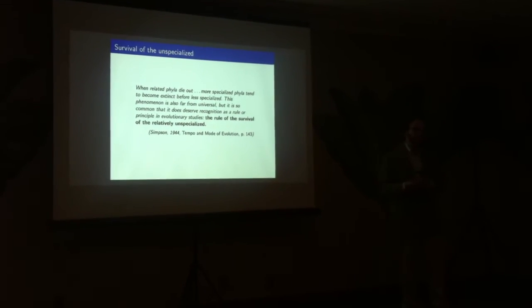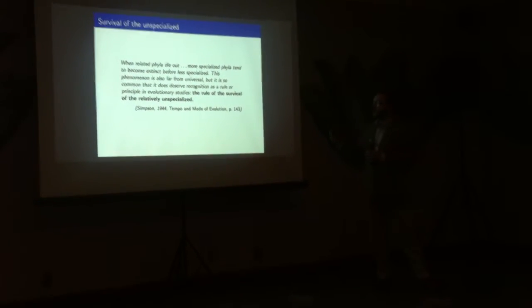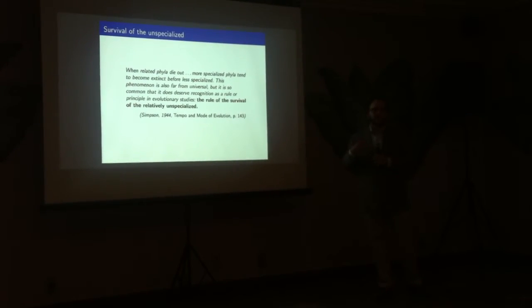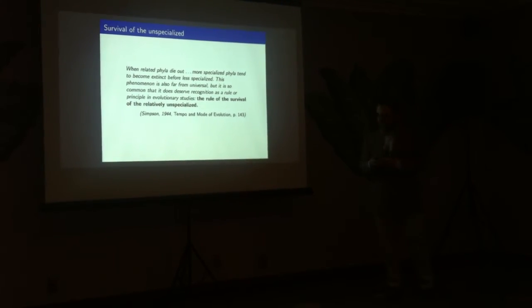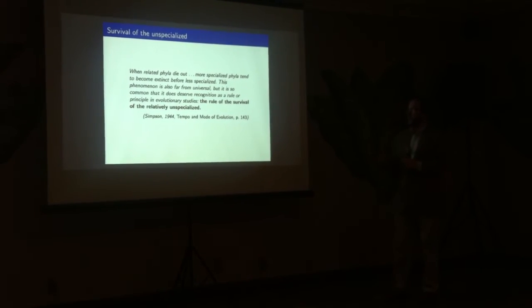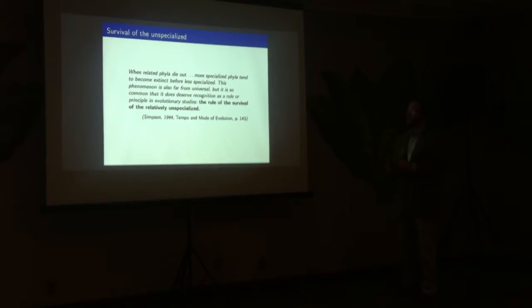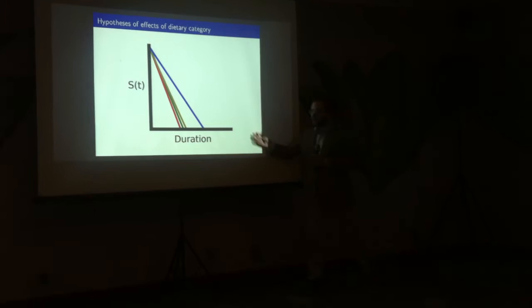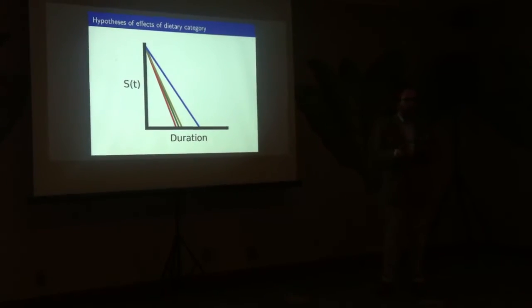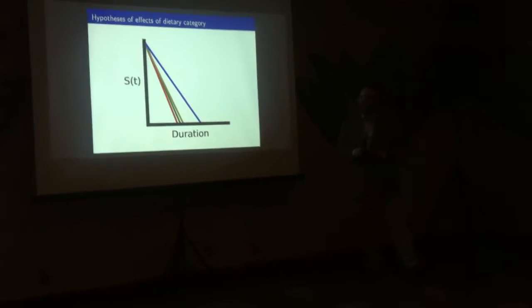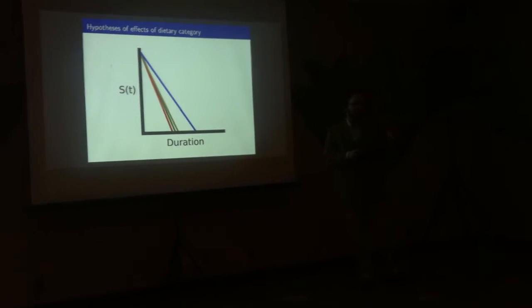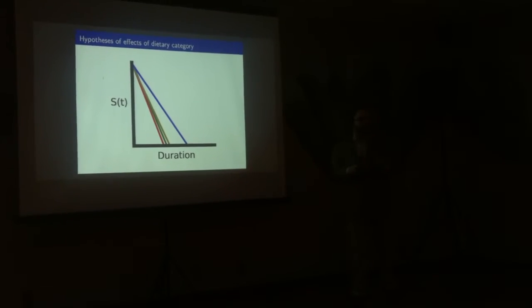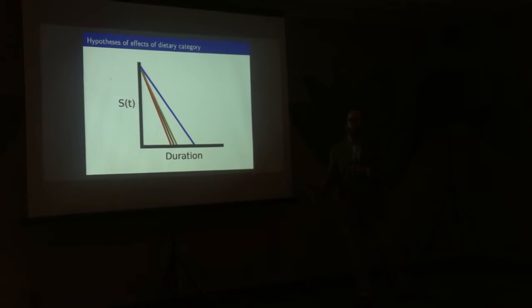This is the rule of the survival of the non-specialized. Now remember in the 40s when they say phyla, we would say taxa. That was just where the language worked. So given this kind of basic rule, which we've shown a few times, we can make some statements about dietary category, where you would say blue is something like omnivory, the other colors are more specialized versions of that, carnivory, insectivory, herbivory. We would say that those more specialized taxa are more likely to go extinct or have shorter durations than the more generalized taxa.